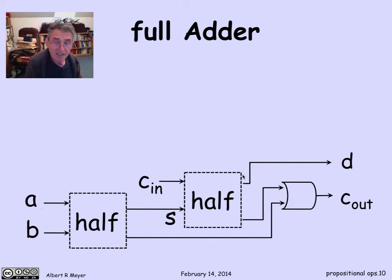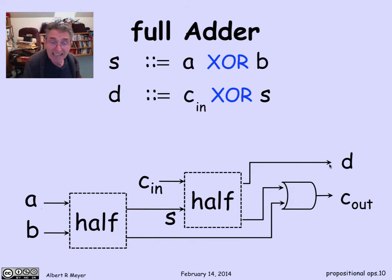How do I express this set of connections as formulas? Well, first of all, s is the output of this first half adder, which is a xor b. The output d I get by taking s, and it's the first output of the second half adder, which means it's c_in xor s. That's easy.